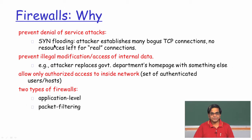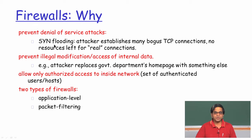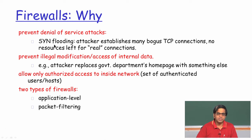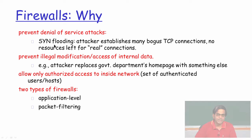The memory buffers available for the server to handle all incoming connections are consumed by these bogus incomplete connections that the attacker is inducing, because of which a legitimate client will not be able to successfully connect to the server. Firewalls today are expected to detect all these different possible DOS attacks and prevent them with different configurations done on the firewall device.